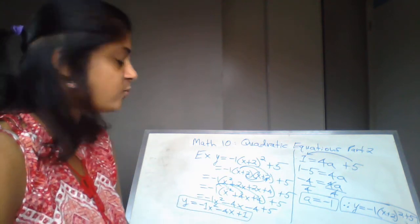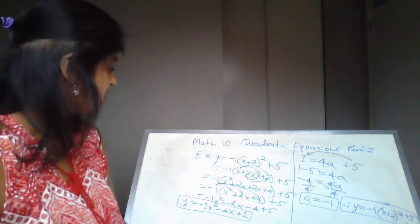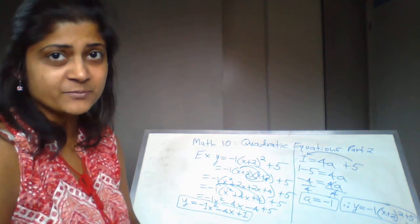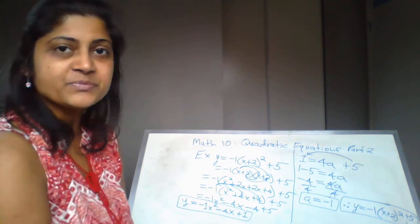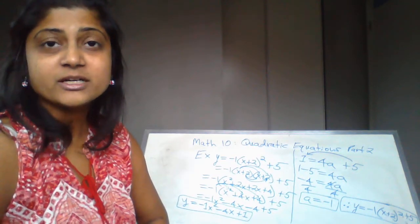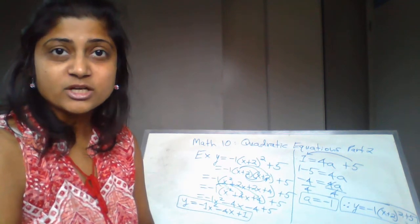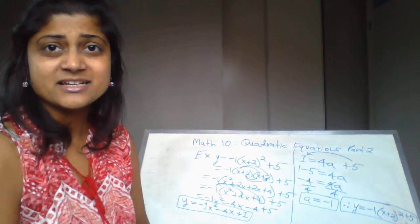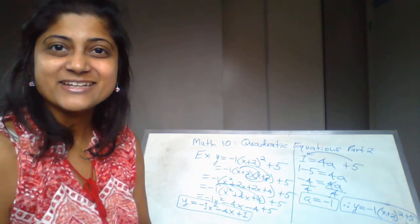So the final answer is y = -x² - 4x + 1. If there is a 1 in front of the x², you don't have to write it. This is the standard form of the equation, while what we have on the right is the vertex form of the quadratic equation. Both equations are equivalent — I'm just changing from one form to another. That brings this video to an end. Thanks for watching — please like, share, and subscribe!